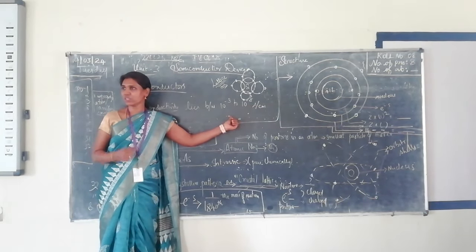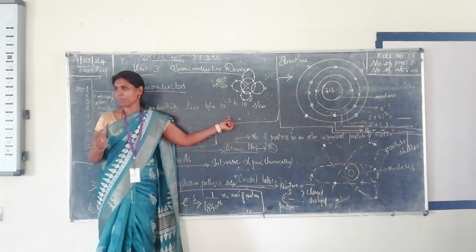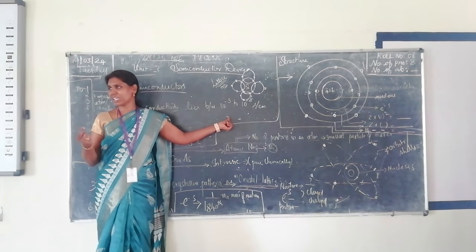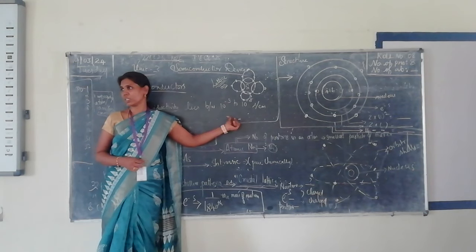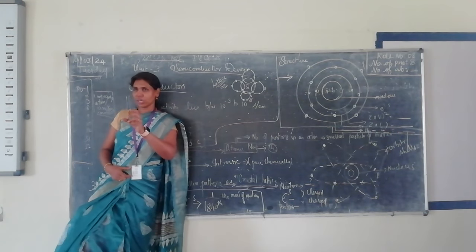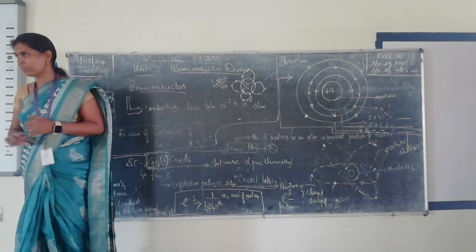What is the range of conductivity? It is within 10 to the power minus 3 to 10 to the power minus 8 ohm per centimeter. That much of connectivity will be there, the remainder will not connect.